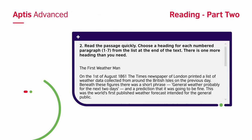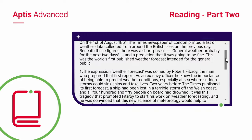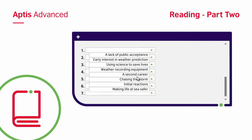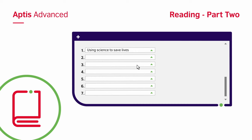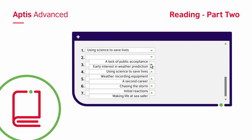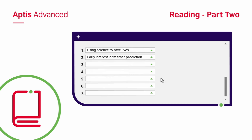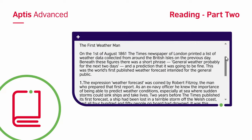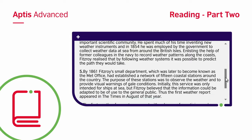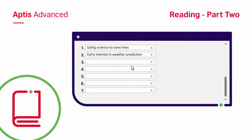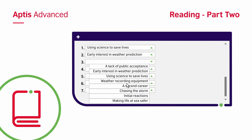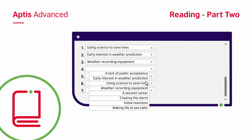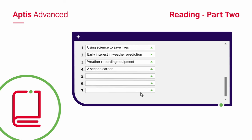In part two, you need to match headings to paragraphs. You will read eight headings, and your task is to match seven of them to paragraphs in the text. There is always an extra heading that does not fit any paragraph. To perform better, read the whole text quickly, then carefully read the headings before starting the task. Look for clues to connect the headings to the paragraphs — these might be similar words, ideas, or topics.